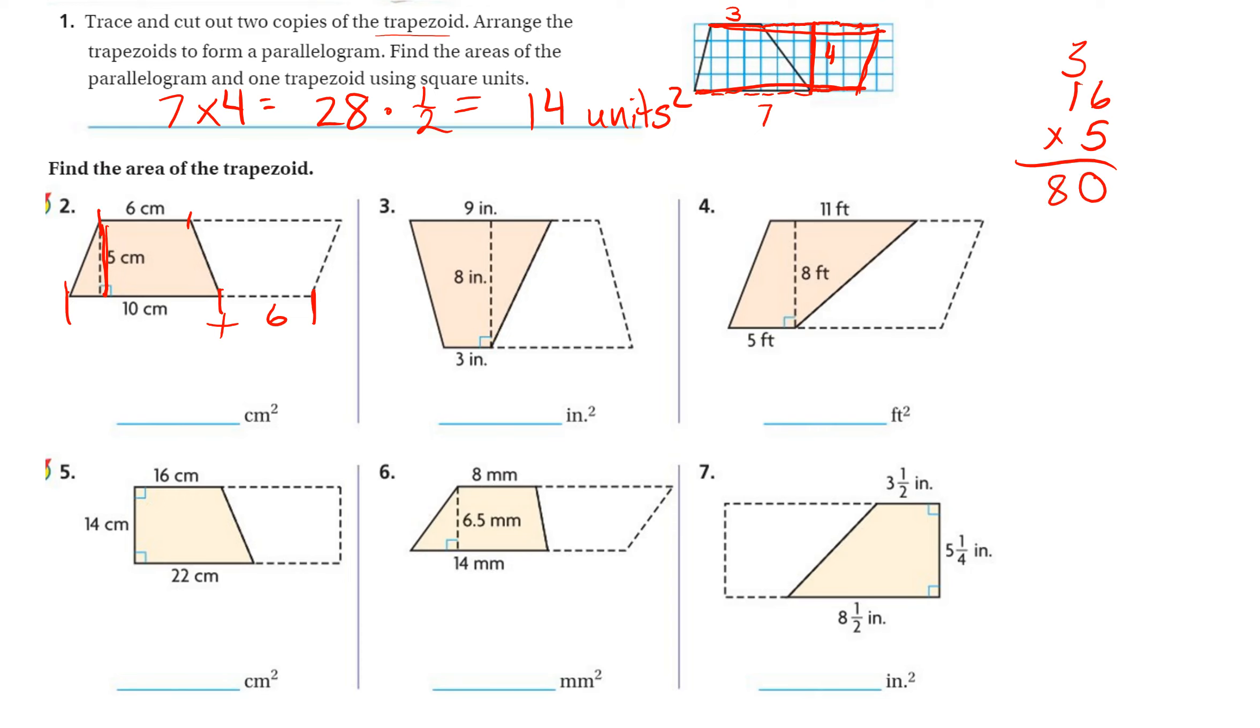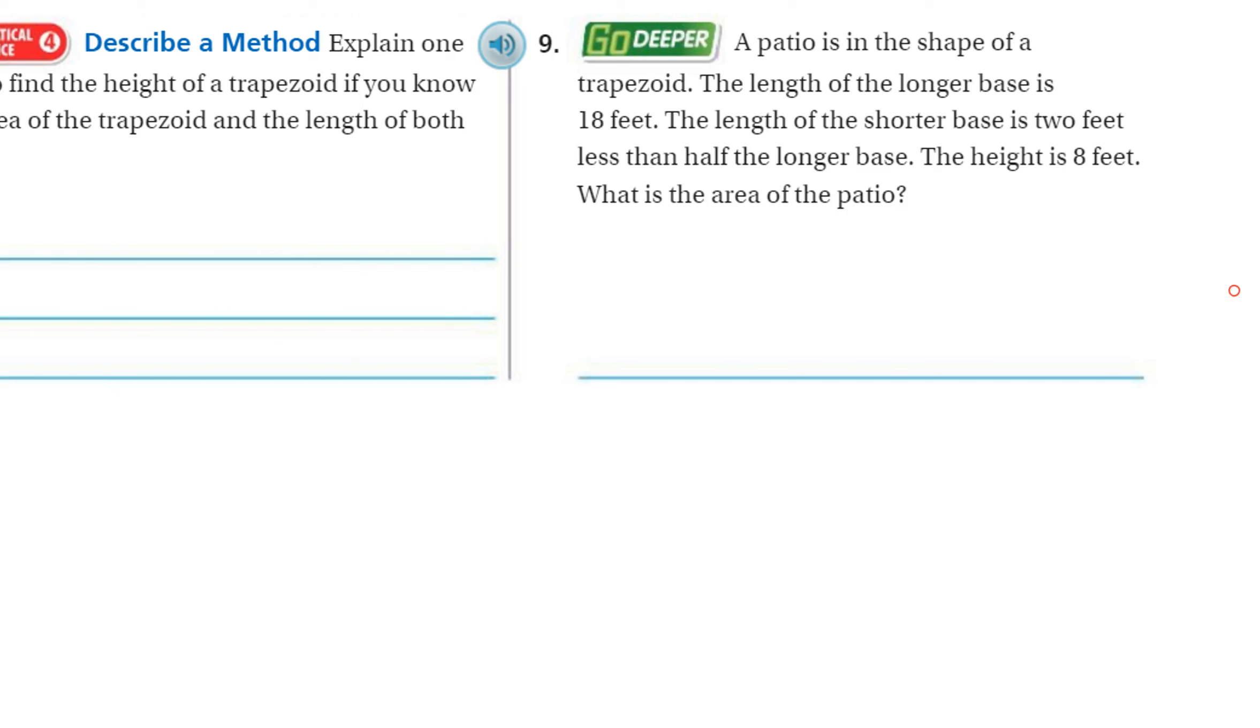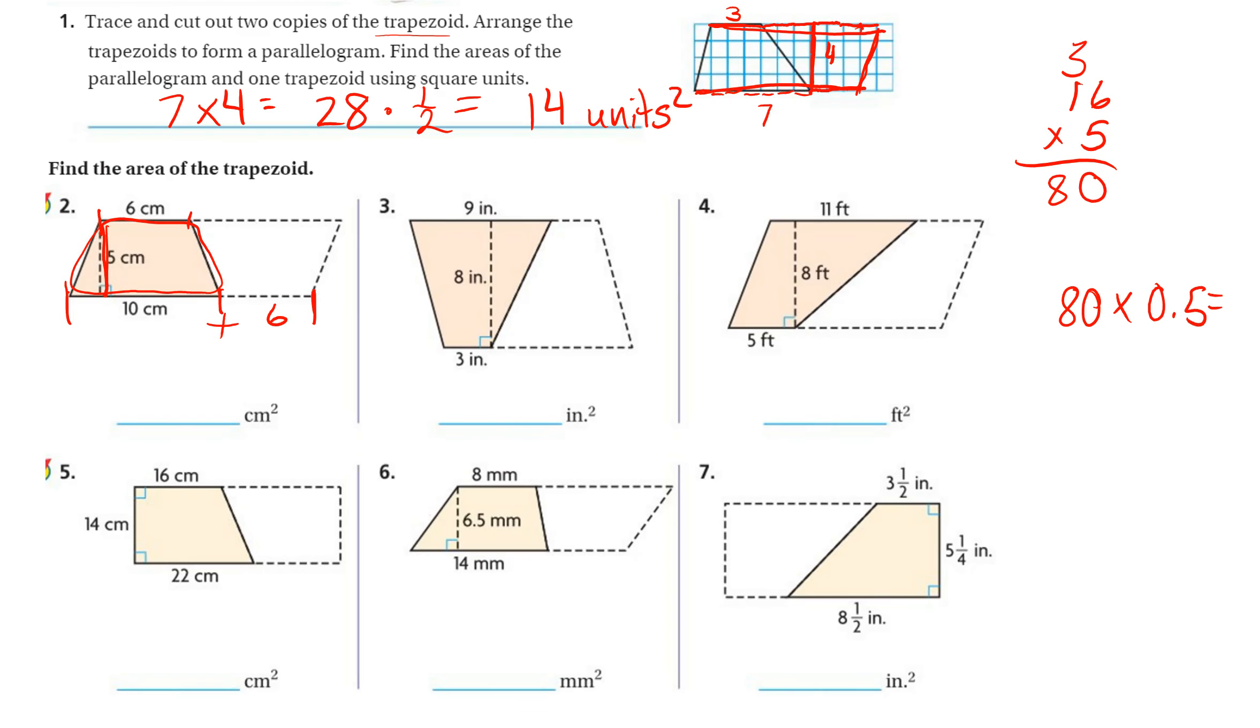And then we have half that to find the area of the trapezoid. So we take this number, 80, and multiply it times one-half or 0.5, but essentially what you're doing is what is half of 80? Half of 80 is 40 centimeters squared.